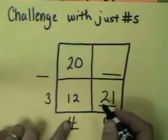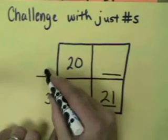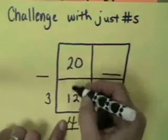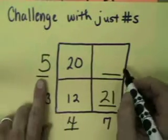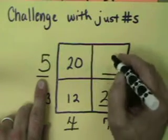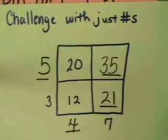That's going to be 4. 3 times 4. Now, I've got a 4 here. 4 times what gives us 20? That's going to be 5. And let's see if I can multiply across here. 5 times 7 is 35.